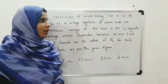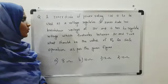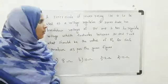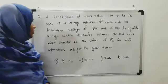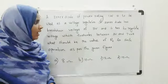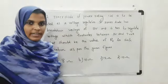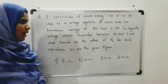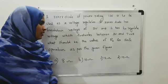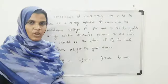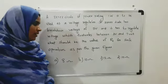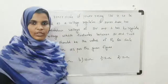A Zener diode of power rating 1 Watt is to be used as a voltage regulator. If Zener diode has breakdown voltage of 5V and it has to regulate voltage which fluctuates between 3V and 7V, what should be the value of RS for safe operation as per the given figure? Options are 8 Ohm, 10 Ohm, 12 Ohm, 15 Ohm.